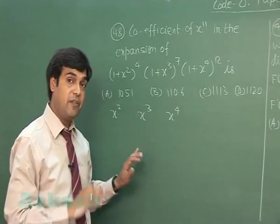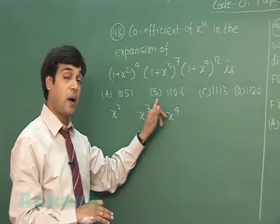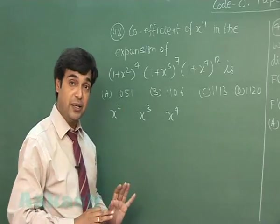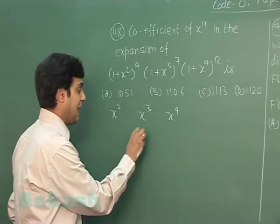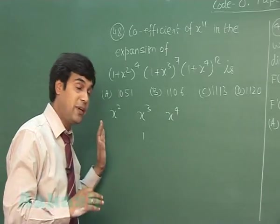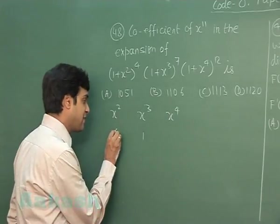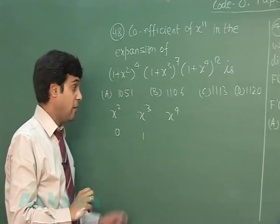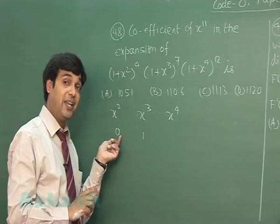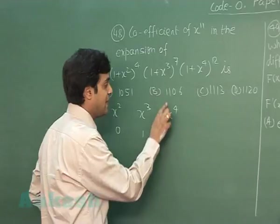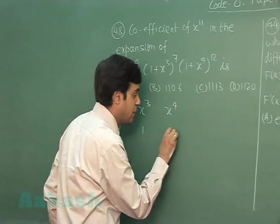So, x³ must be there with odd power: x³ to the power 1, x³ to the power 3, right? Now, if I take x³ to the power 1, now the possibilities for x² and x⁴. If the power of x² is 0, then we have so far obtained power 3. We need power 11 means the power of x⁴ should be 2.